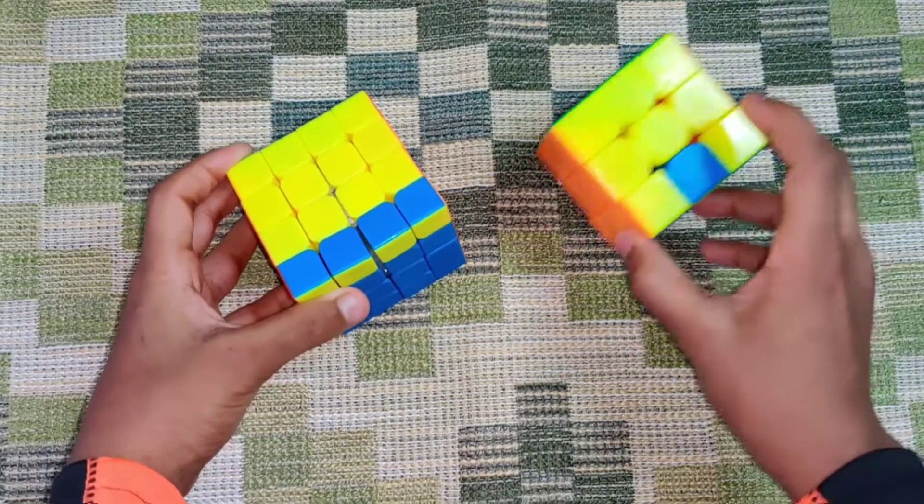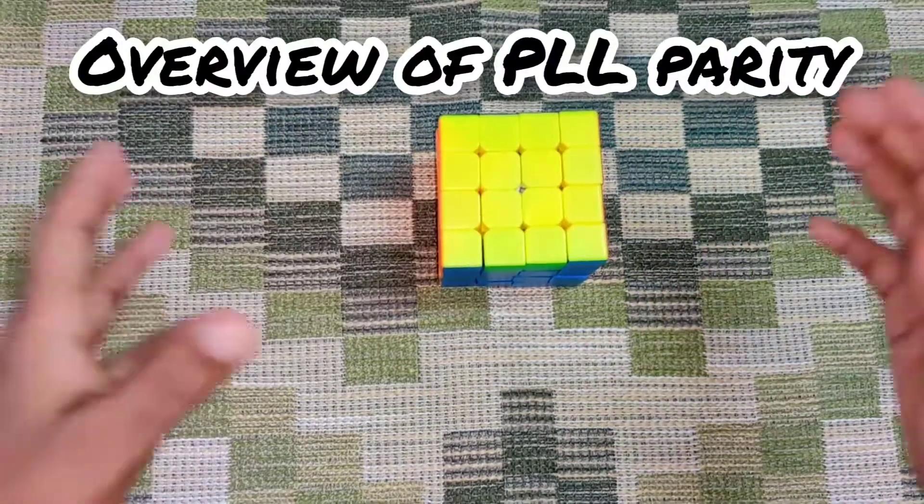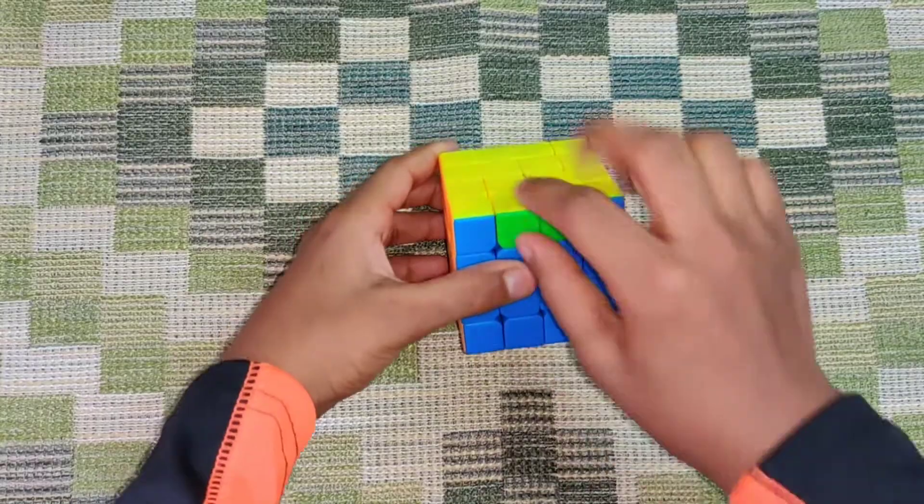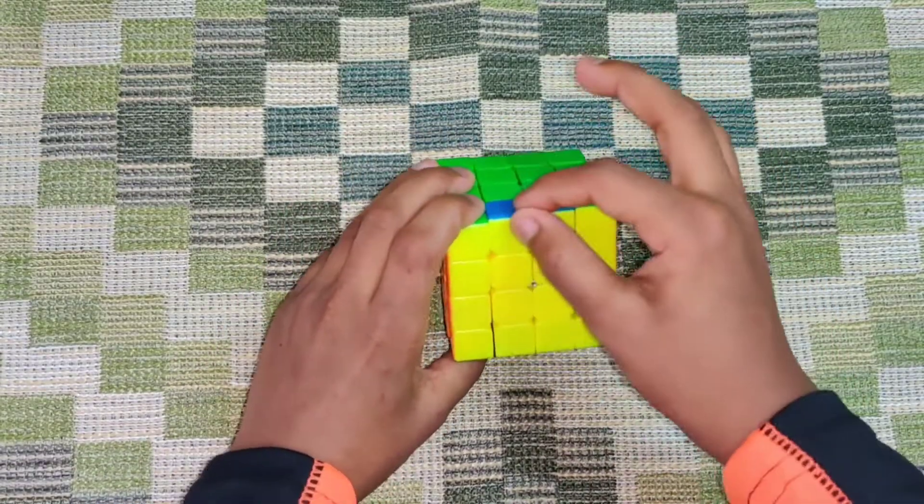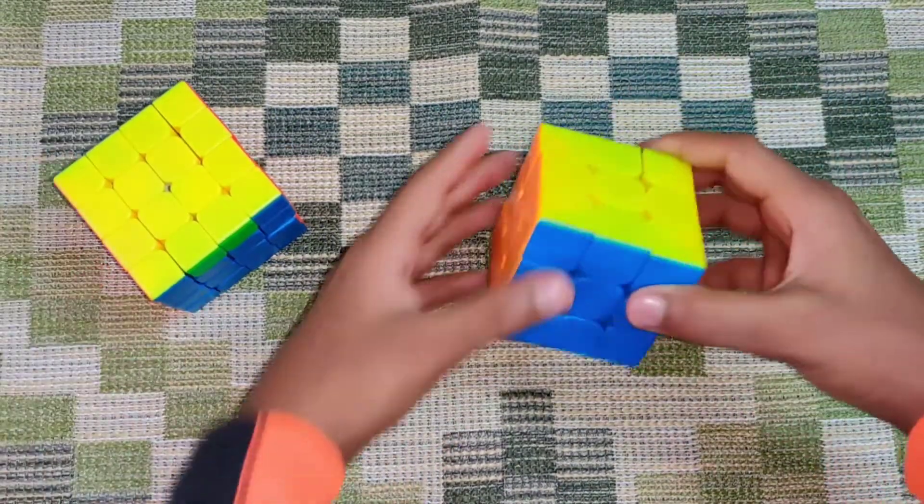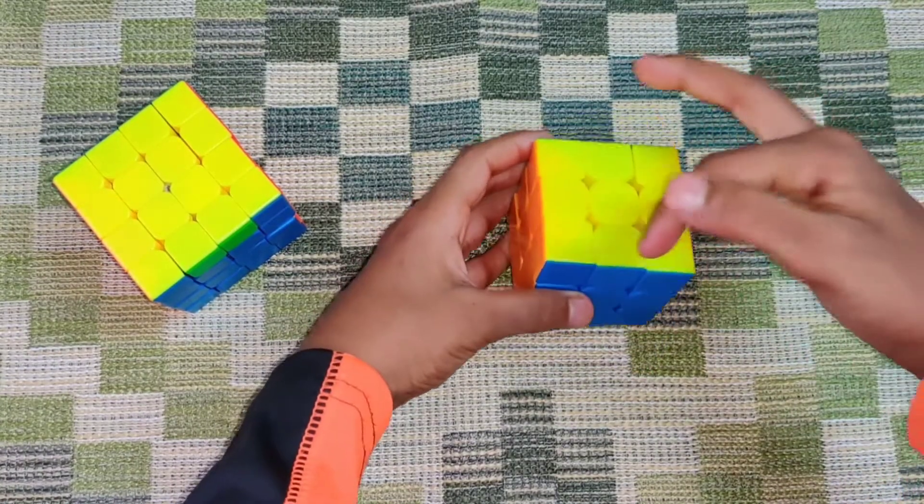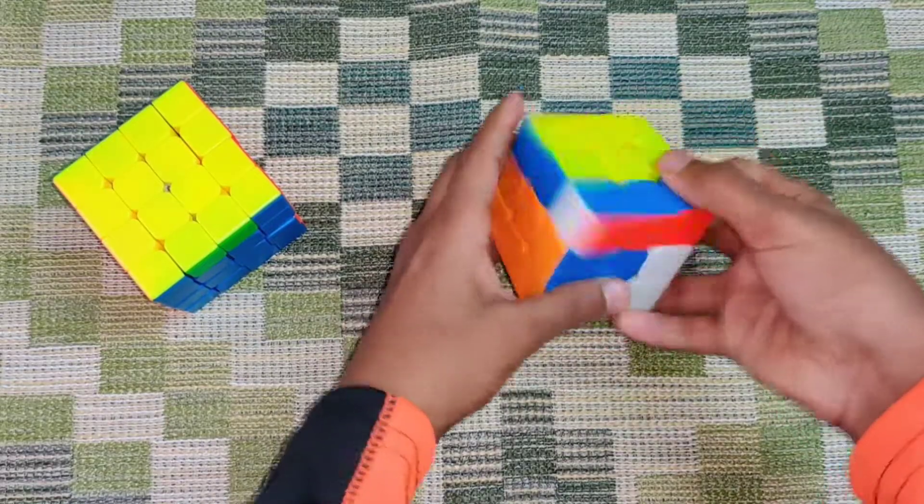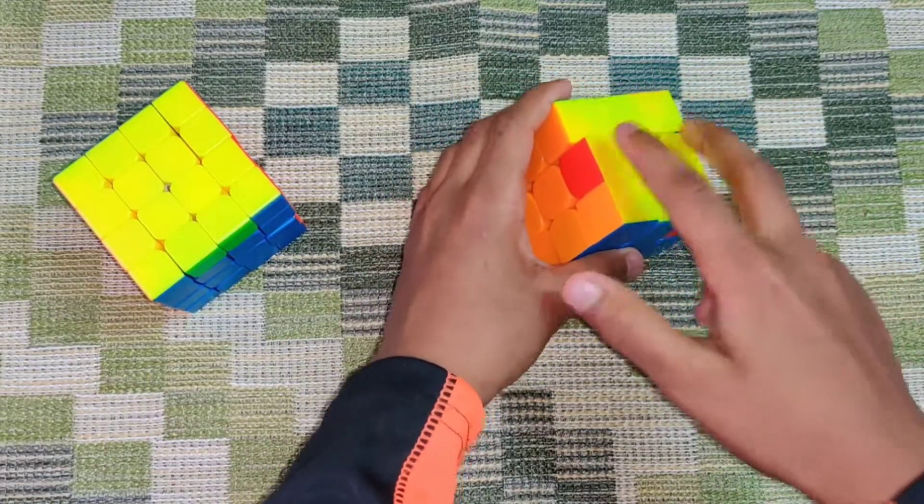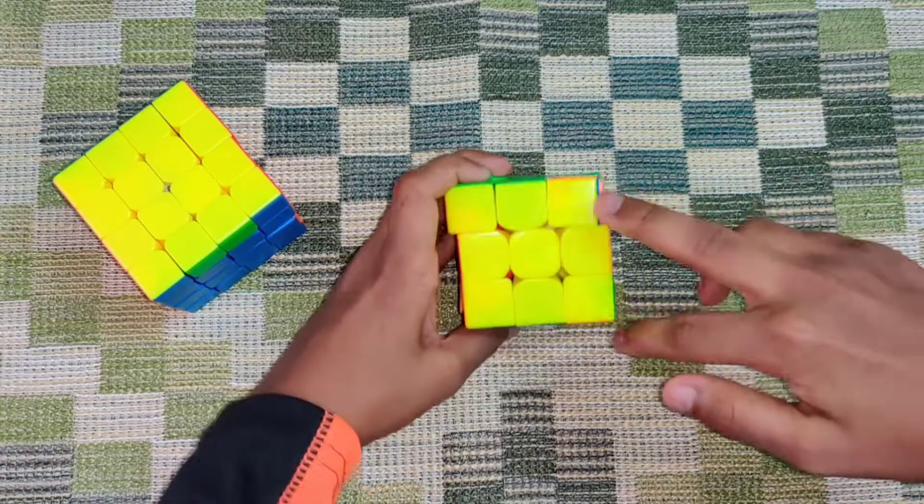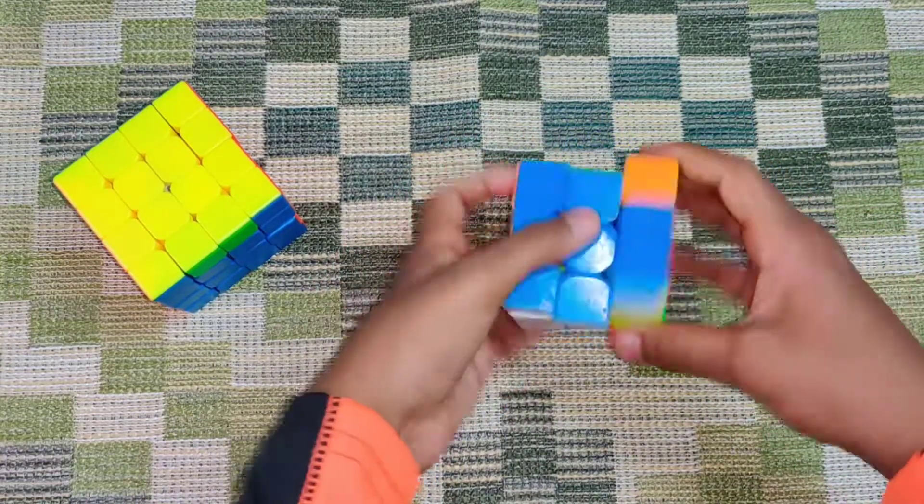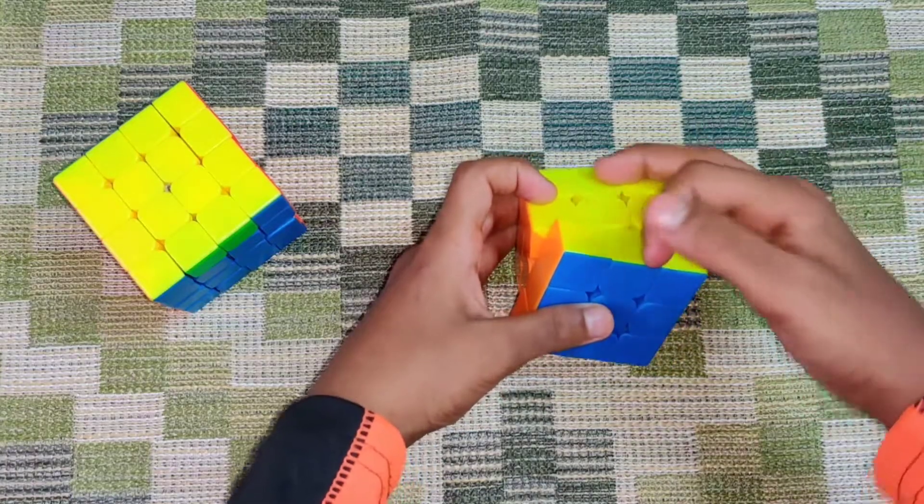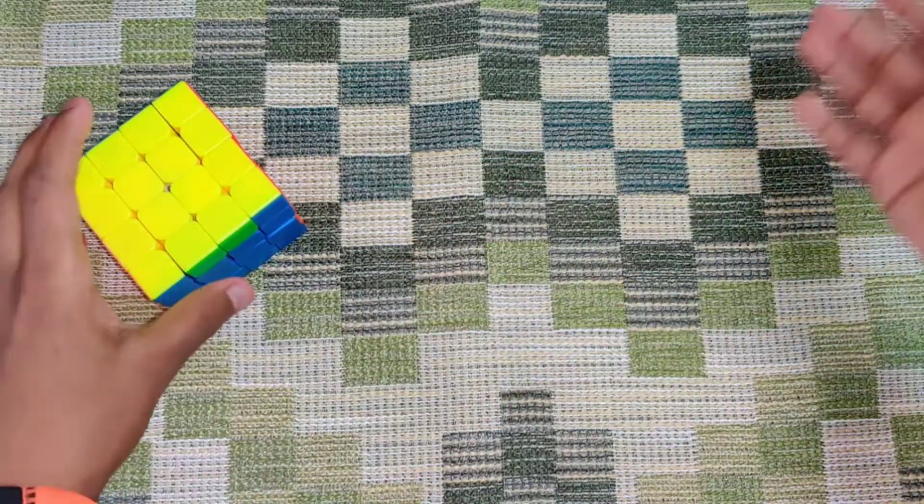So now for the overview of PLL parity. PLL parity is when you swap this edge pair with this edge pair. It's not possible on a 3x3. There's no algorithm to swap only two edges. You can do a T perm that swaps these two edges, but it also swaps these two corners. There are lots of algorithms that can swap two edges, but they also swap two corners along with the edges.